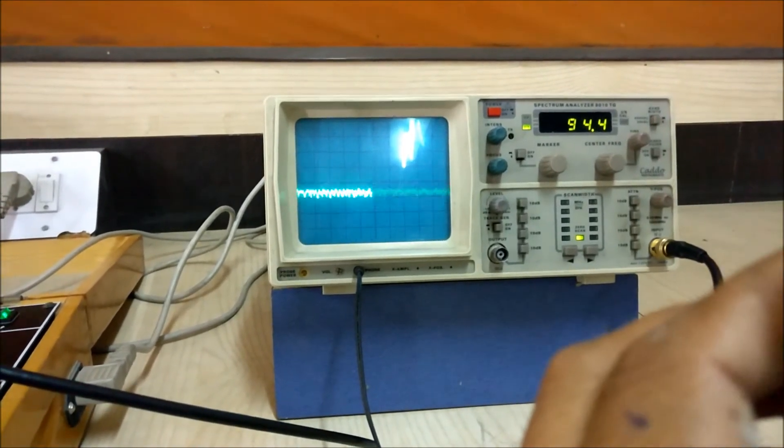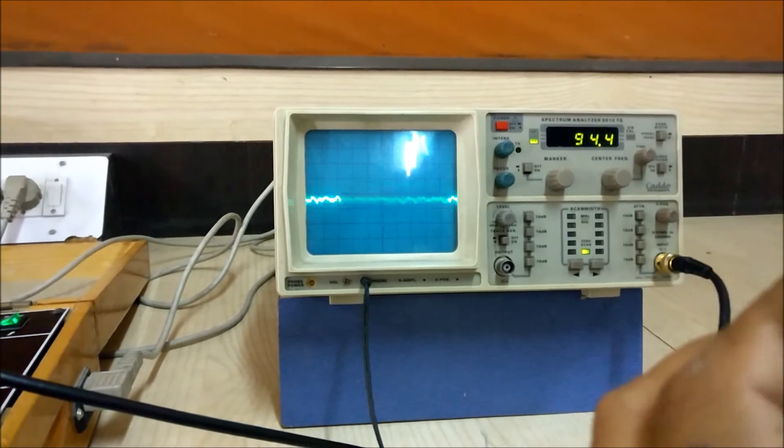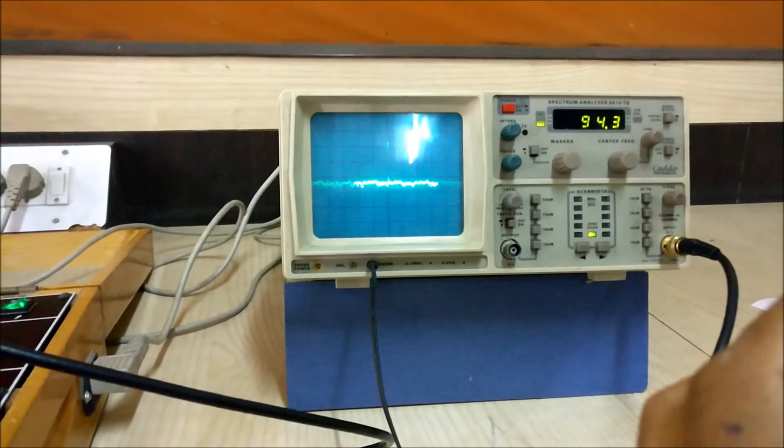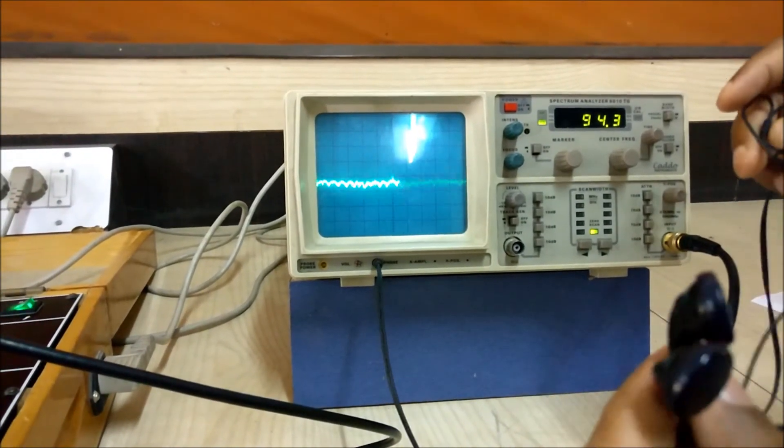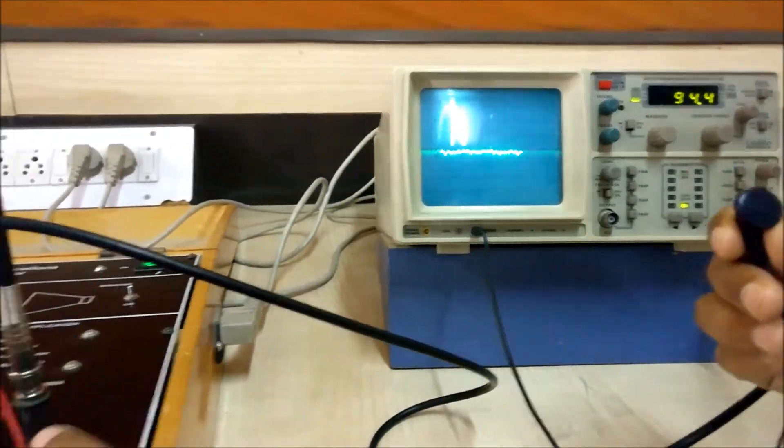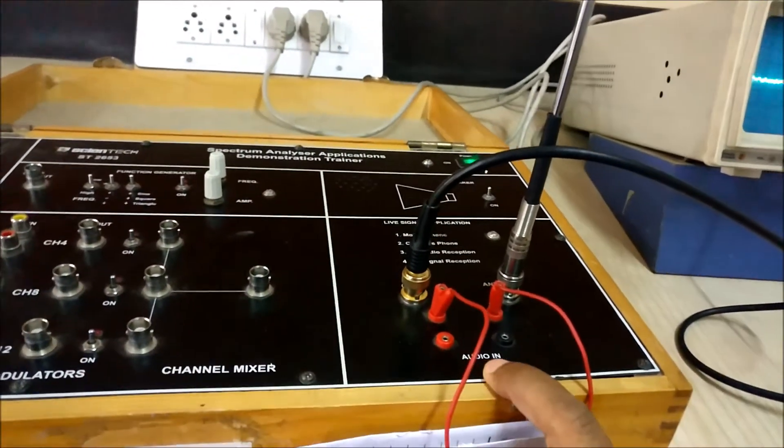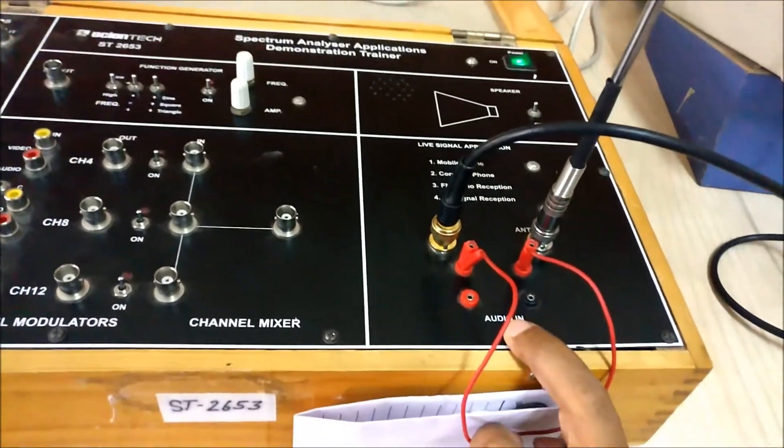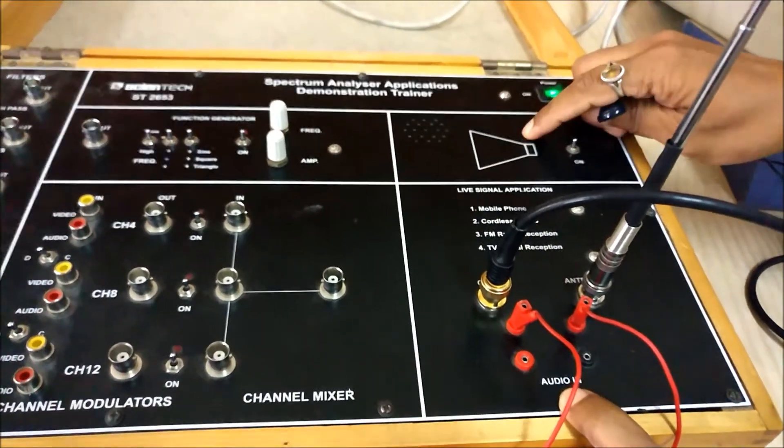So we can see here we can see all the signals available in this spectrum band. Another way of demodulating is that we can also connect the jack to this kit which is provided here to audio end. We can provide directly to audio end and listen from this speaker.